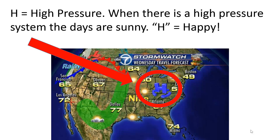The first thing we need to talk about is what the H stands for on a map. The H stands for high pressure — it does not stand for hot. When there is a high pressure system, the days are sunny. An easy way to think of this would be to say that the H stands for a happy day. Go ahead and pause this video and write down the definition of high pressure.